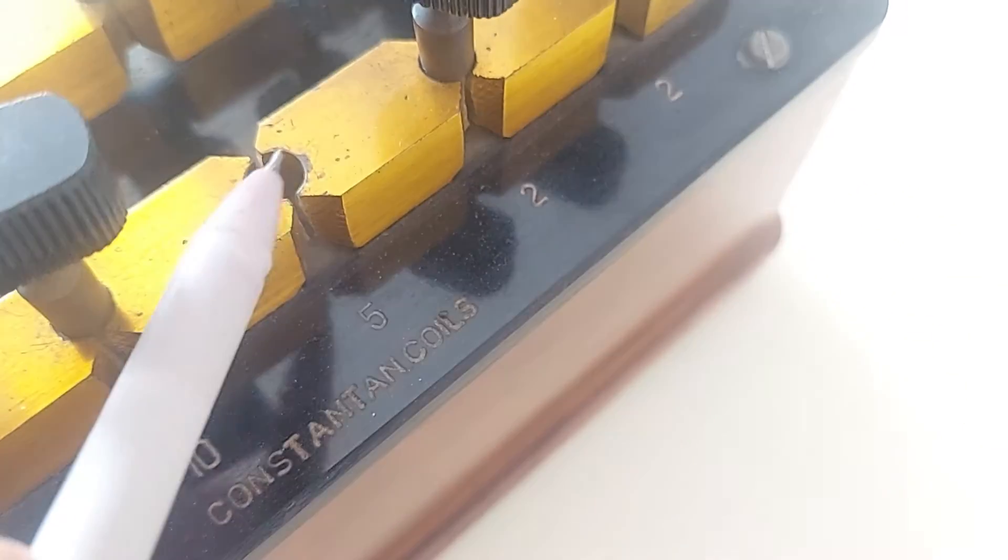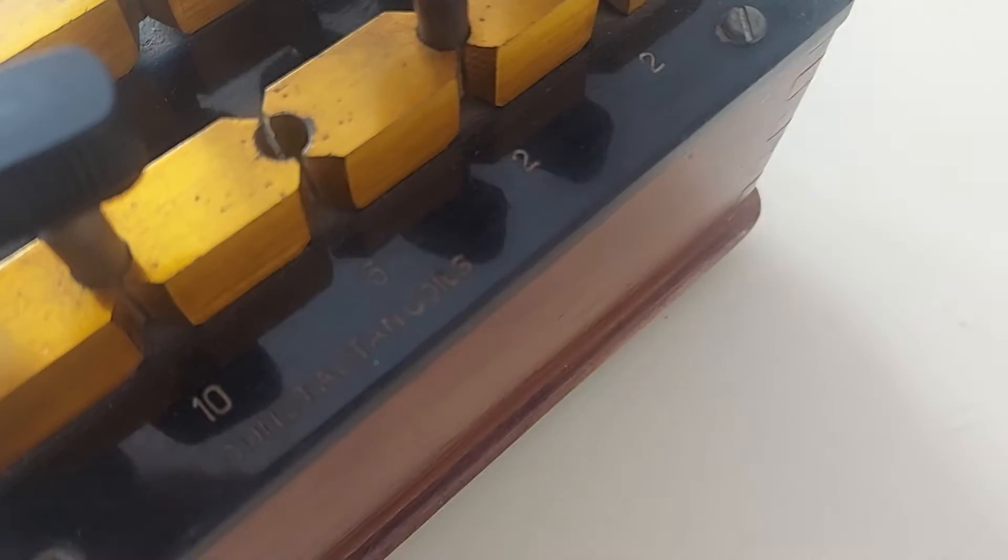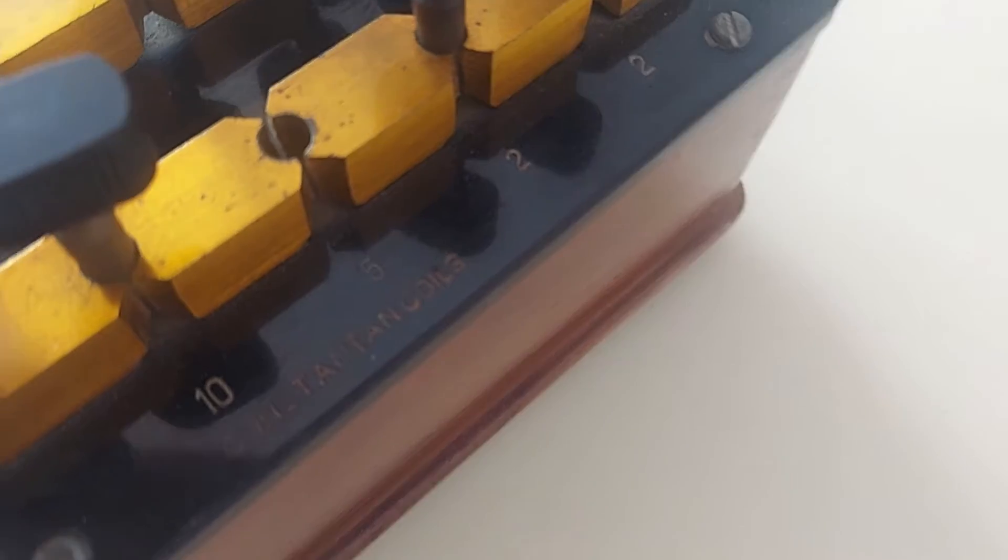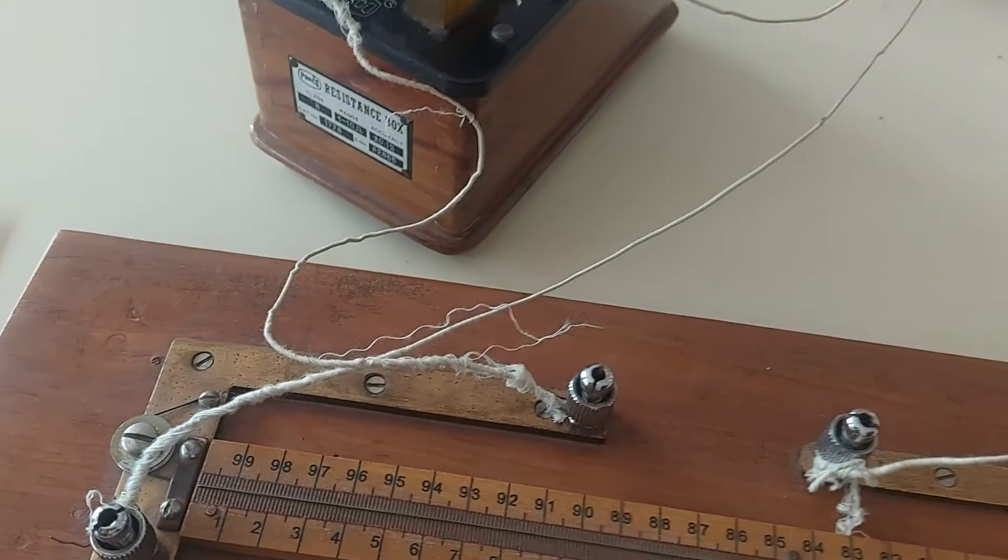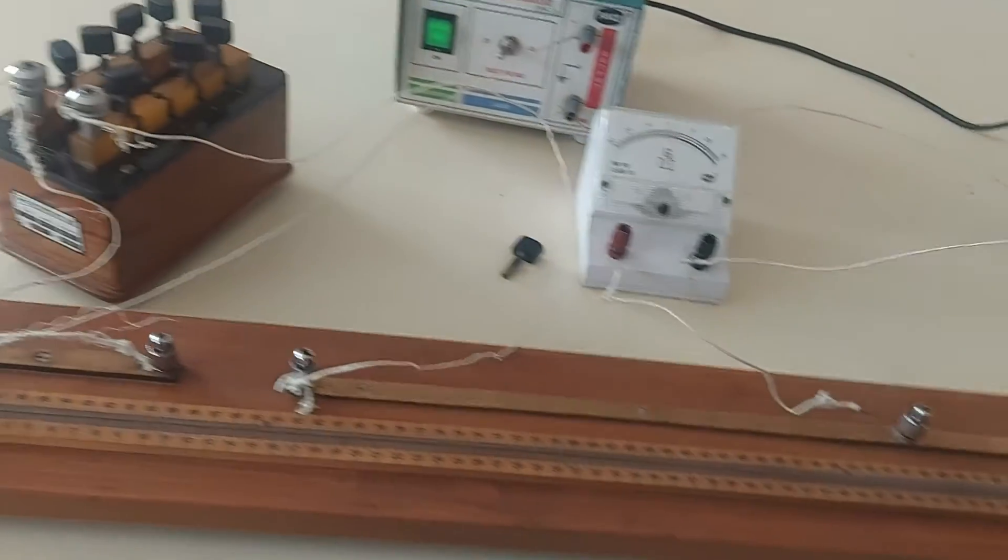This is the knob. When you remove this knob, the resistance introduced in the circuit is 5 ohms. Now first we will check the deflection in the galvanometer by touching the jockey to the right side. See the deflection?